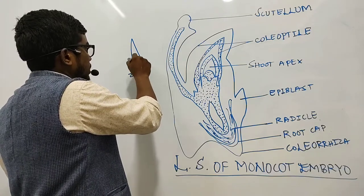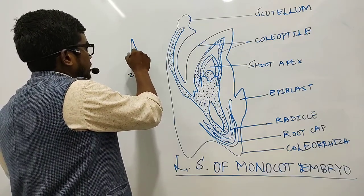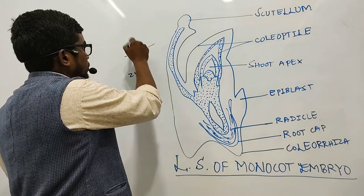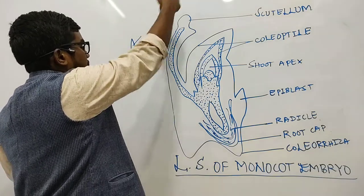Now let us consider we have a zygote. So let us consider this as the zygote. The zygote will undergo a division to form or develop into two cells: the upper cell we call basal cell, and the lower cell we call terminal cell.